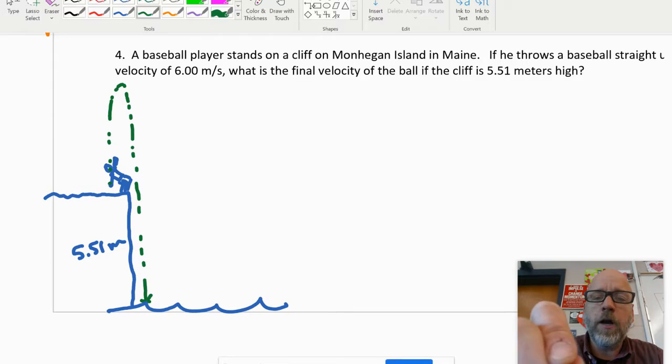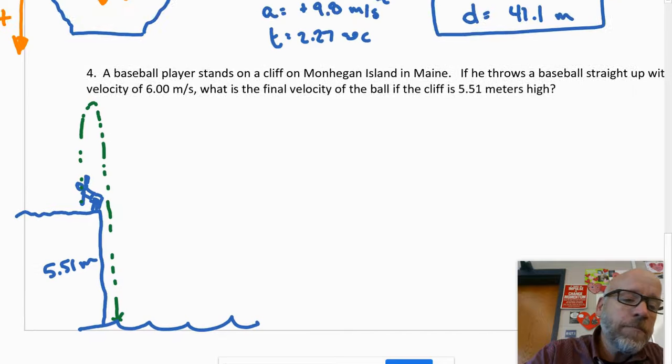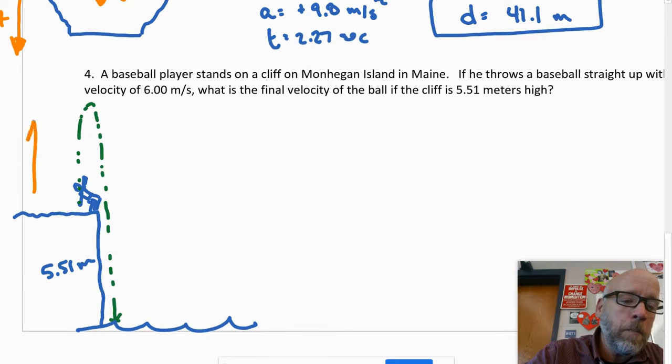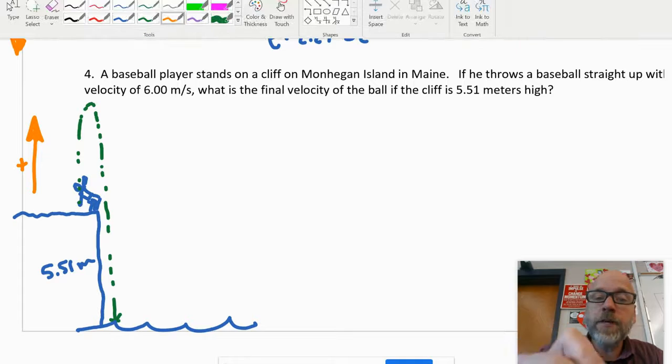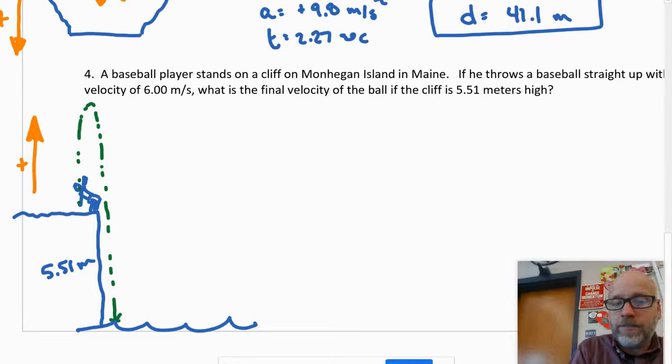Now, the first three problems in this worksheet were too easy. This is when it gets interesting. Now because the ball is going up to begin with, I am going to make up positive. And now when I look at the information that's given, I have to make sure I take that into consideration. So the initial velocity, it was thrown upwards and up is the positive direction.